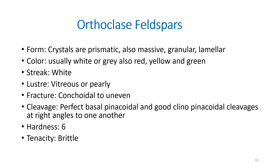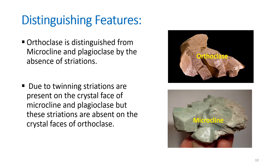Physical properties of orthoclase feldspars: form or habit is generally prismatic, also massive, granular, and lamellar. Color is usually white or gray, also red, yellow, and green. Streak is white, luster is vitreous or pearly, fracture is conchoidal to uneven. They have perfect basal pinacoidal and good clinopinacoidal cleavages at right angles to one another, hardness of 6, and brittle tenacity. Orthoclase is distinguished from microcline and plagioclase by the absence of striations; twinning striations are present on crystal faces of microcline and plagioclase but absent on orthoclase.